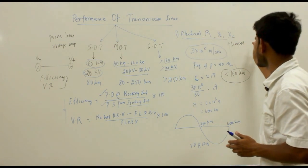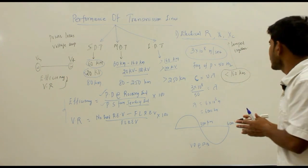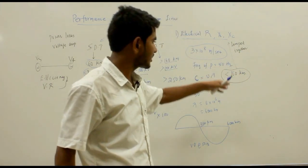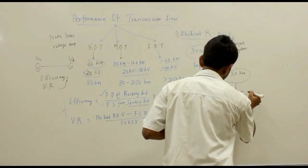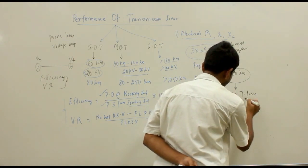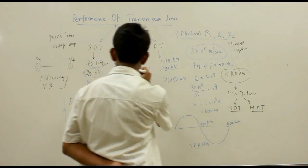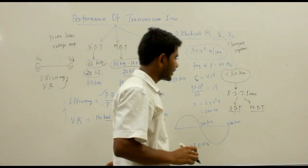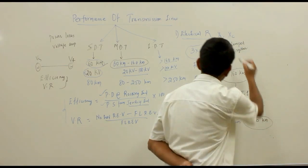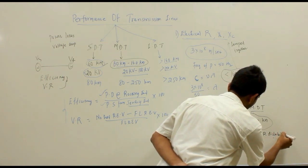For line lengths below 160 km, the electrical resistance, inductance, and capacitance are considered to be lumped together — meaning they are combined and placed together, not distributed. Hence, such lines below 160 km are referred to as electrically short transmission lines, which are categorized into the short distance (up to 60 km) and medium distance (60 to 160 km) transmission lines. For line lengths greater than 160 km, these parameters are assumed to be distributed, and such lines are referred to as long transmission lines.